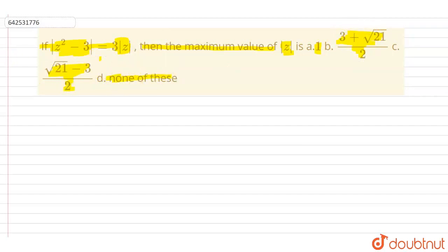So here, using triangular inequalities, we can say that mod of z squared minus 3 will always be greater than or equal to mod z squared minus 3.